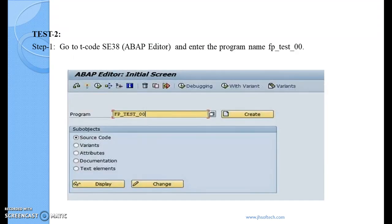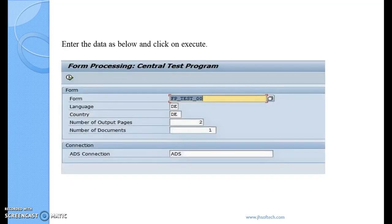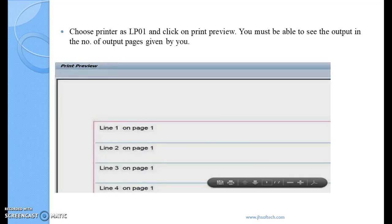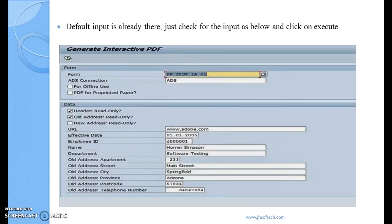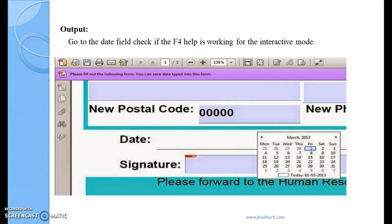Another test: go to fp-test-000 and execute it. The form name is fp-test-000. Use lp0 as the default printer as used in scripts and SmartForms — you will see the output in print preview. A third test is to go to the program fp-test-te-01 and execute it. Default input is already there. Check the input and click execute. In the output, go to the date field and check if the F4 help is working for interactive mode.